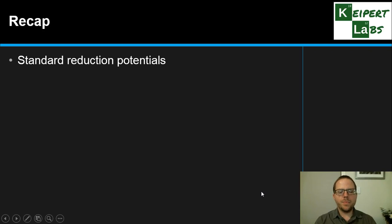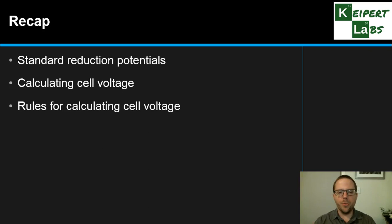We recapped the concepts around standard reduction potentials as values that we can use to calculate voltage. We talked about the formula that we use to calculate cell voltage, the steps involved in calculating the voltage of a cell and combining the halves together, and then we went through two examples to show you how it's done. Now it's over to you. Thanks very much for watching. Bye for now.